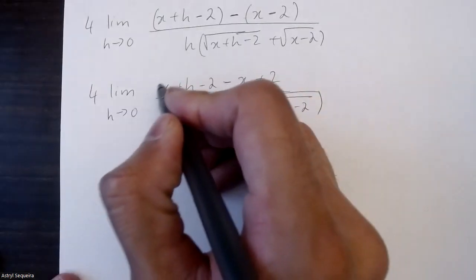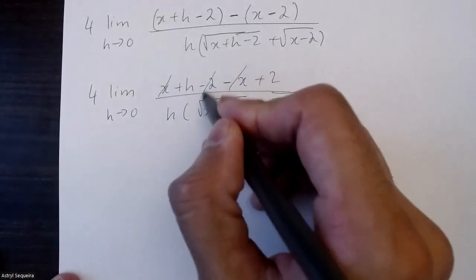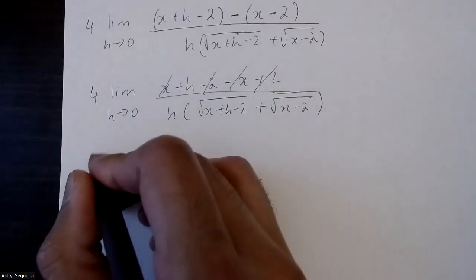So I'm going to combine like terms on the top, so x and negative x cancel, negative 2 and positive 2 cancel. I'm just left with an h on the top.